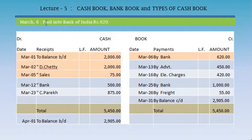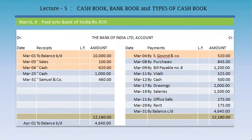Next transaction, March 6: paid into Bank of India. When we pay cash into the bank, our cash will reduce, so we credit the cash book: March 6, by bank, Rs. 620. The same amount is received into the bank account, so on the debit side of the Bank of India account: March 6, to cash, Rs. 620.